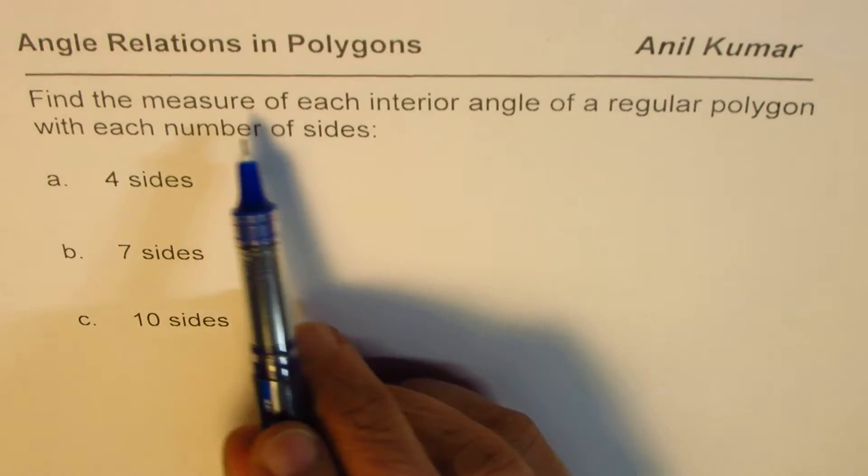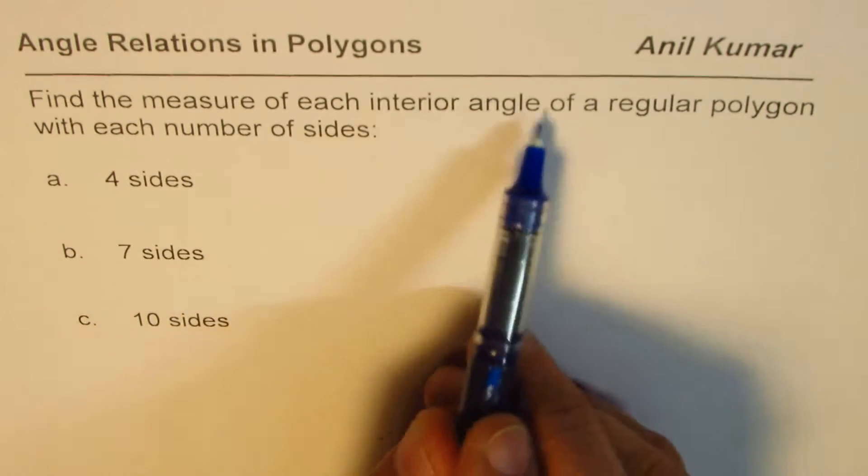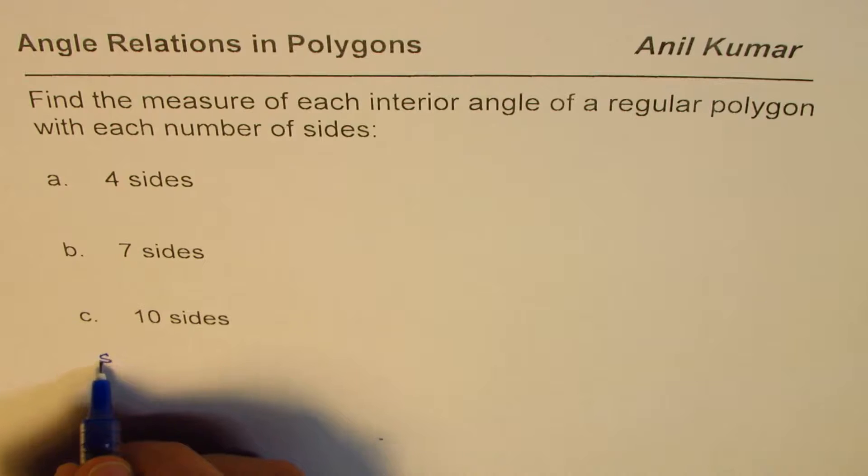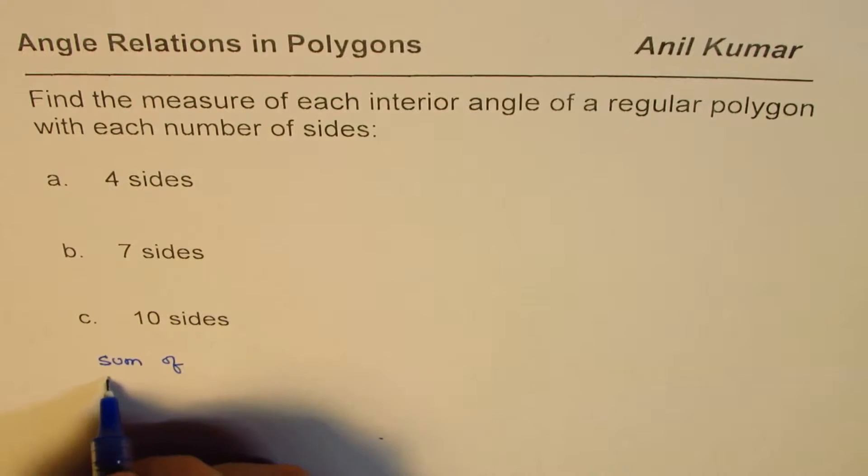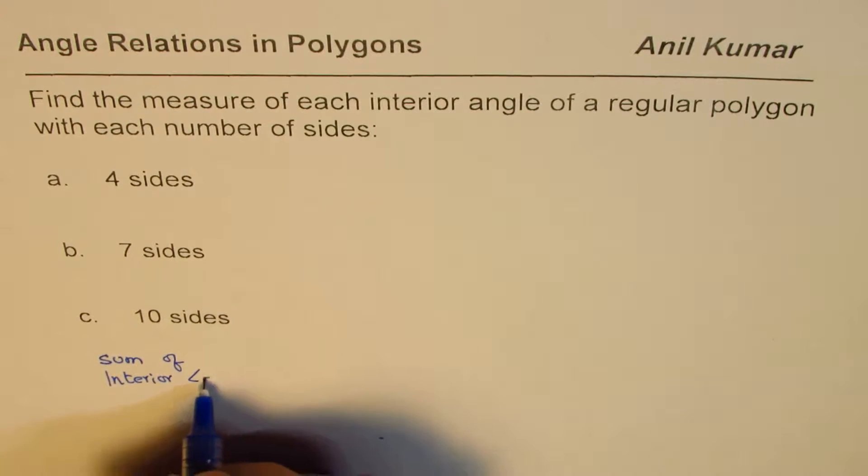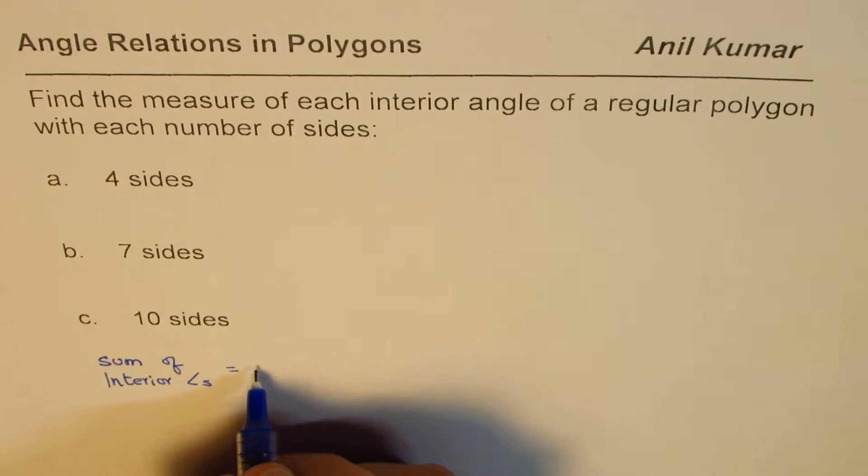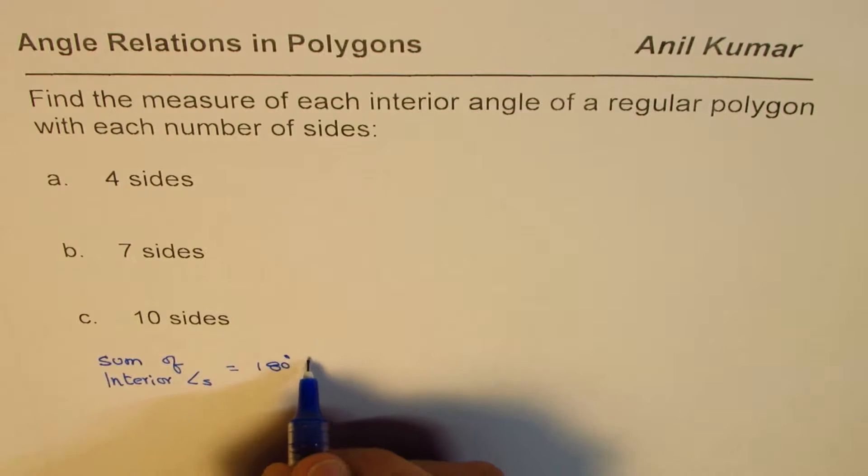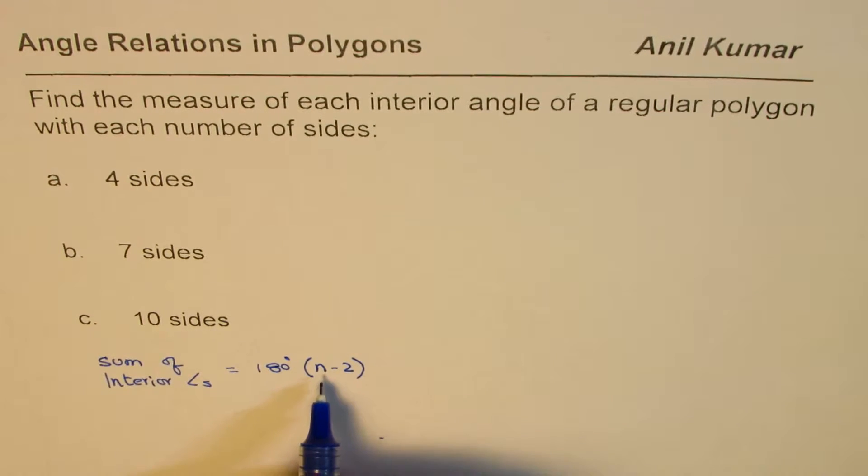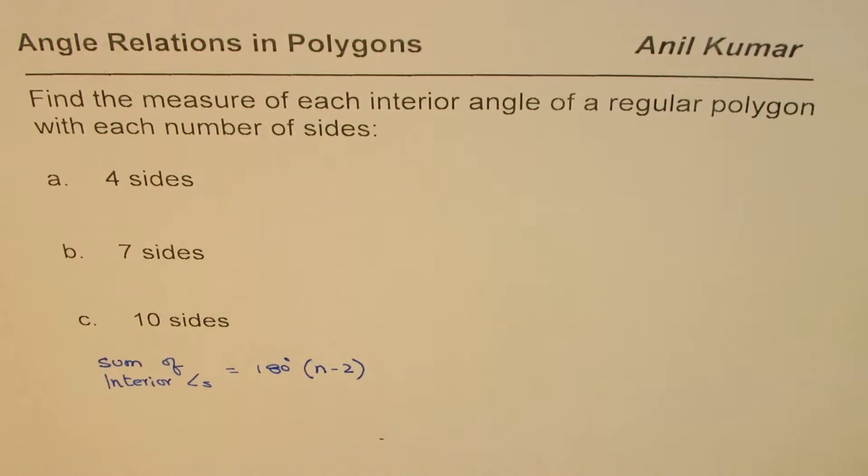As you know, the sum of interior angles can be given as 180 degrees times n minus 2. Since n minus 2 is the number of triangles which can be formed by an n-sided polygon, that gives you the formula for finding sum of interior angles.